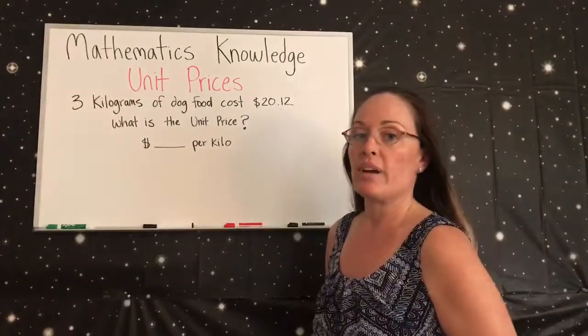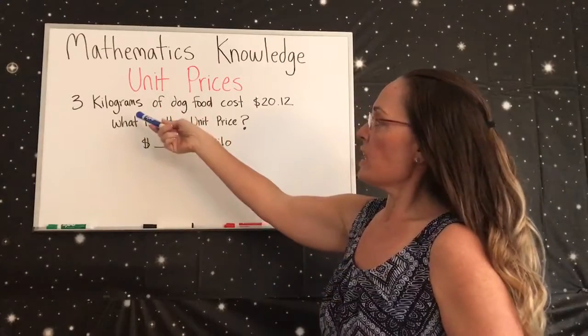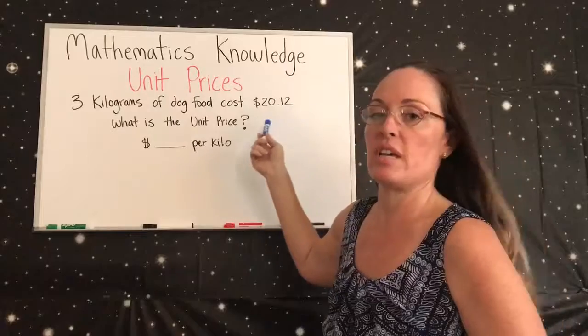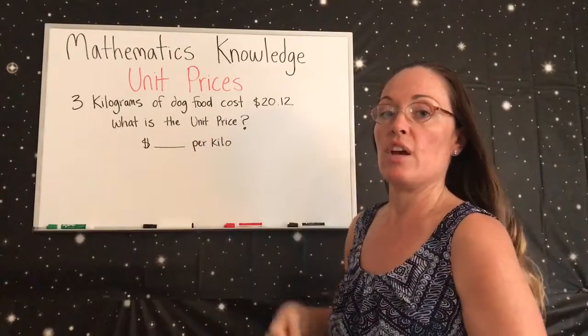Now we're talking about unit prices. The question is, what do we do with 3 kilograms of dog food that cost $20.12? What is the unit price?